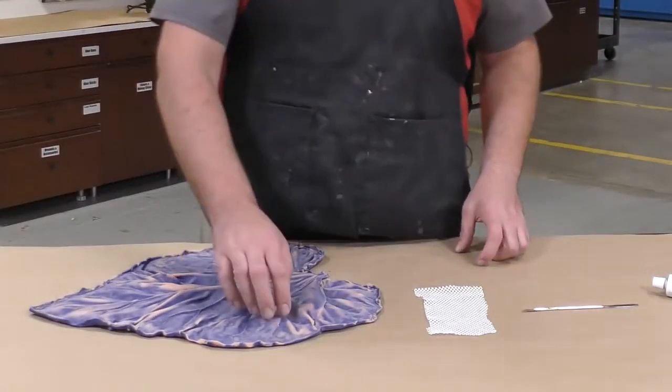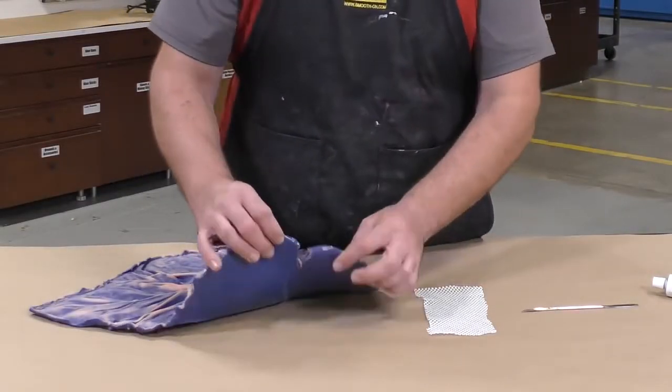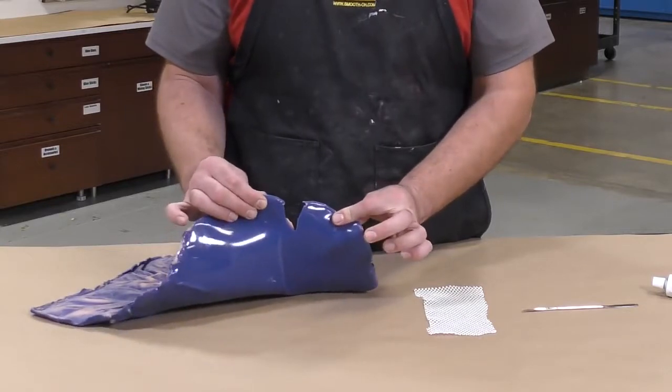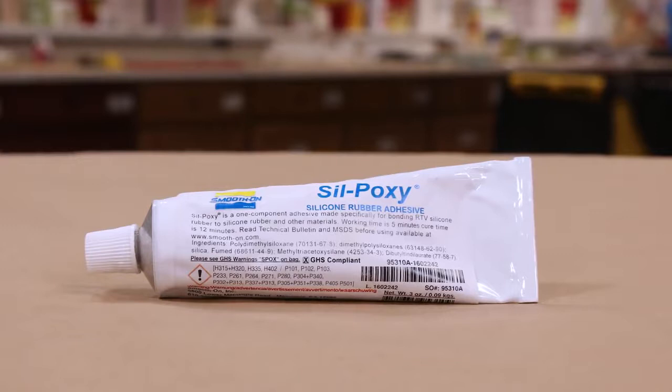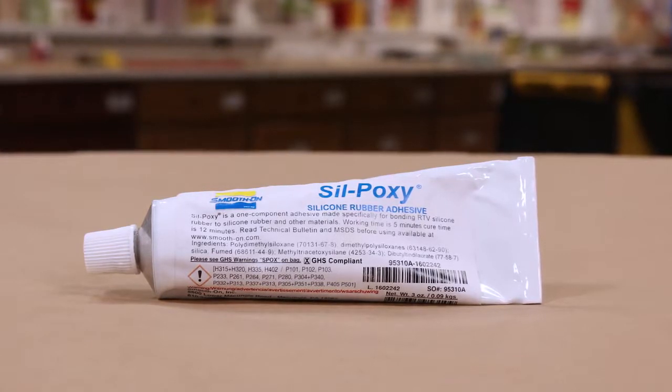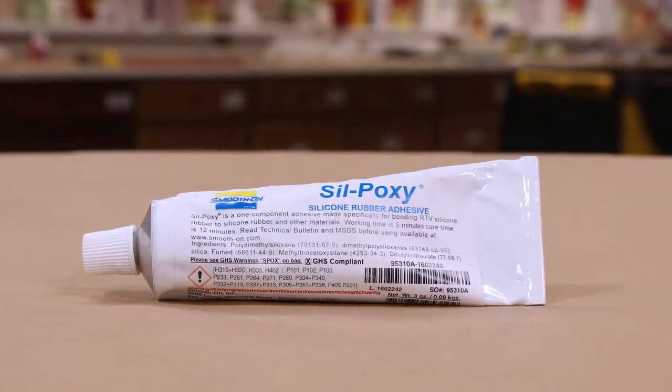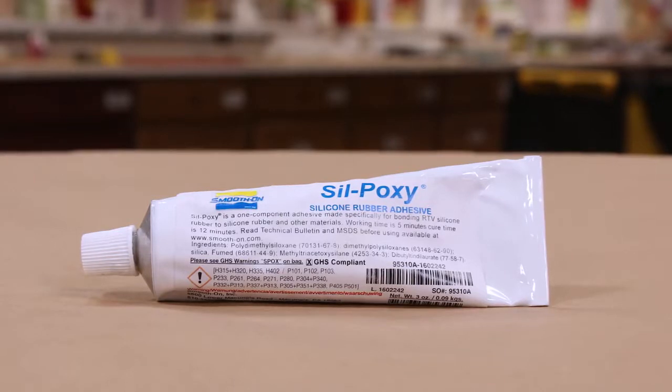Hello everyone and welcome. Today I'm going to demonstrate how to fix a torn silicone mold using the Silpoxy silicone adhesive. This adhesive works on platinum and tin-based silicones to create a strong and flexible bond.